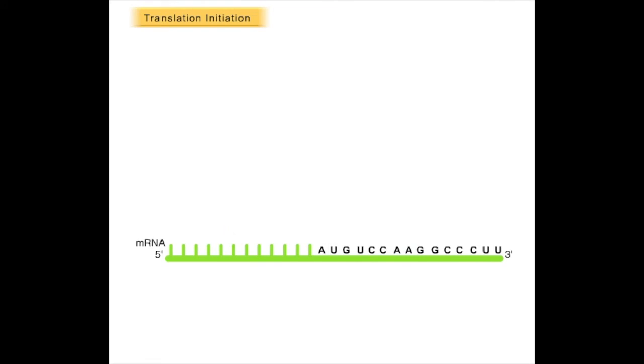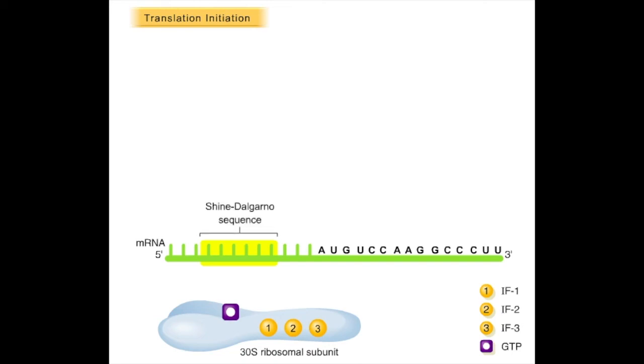In prokaryotes, translation initiation occurs in three steps, as follows. First, the small ribosomal subunit, 30S subunit, complexes with three proteins named initiation factor 1, initiation factor 2, and initiation factor 3. A molecule of GTP also attaches. The ribosome IF-GTP complex recognizes a sequence in the leader, upstream of the AUG start codon. This sequence is called the ribosome binding site, or the Shine-Dalgarno sequence, after its discoverers. This sequence is complementary to a sequence at the 3' end of the 16S ribosomal RNA of the 30S ribosomal subunit, and serves to align the ribosome on the mRNA in its proper reading frame.